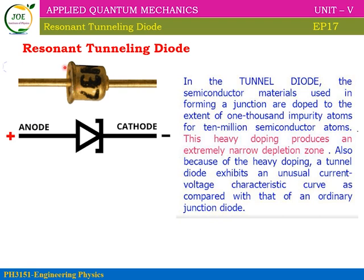Physically, the Resonant Tunneling Diode looks like this. The electronics symbol for a normal diode is a triangle, representing the PN Junction Diode. The symbol for the Resonant Tunneling Diode includes holes and the normal semiconductor PN junction diode symbol. We add 1000 times impurities — this is called a high concentration of doping.